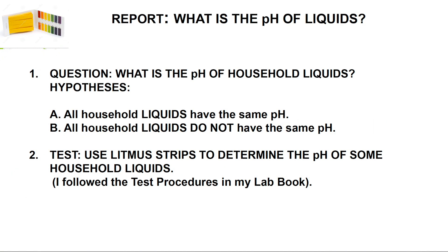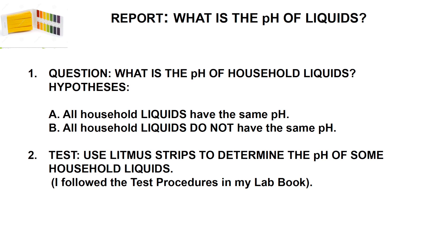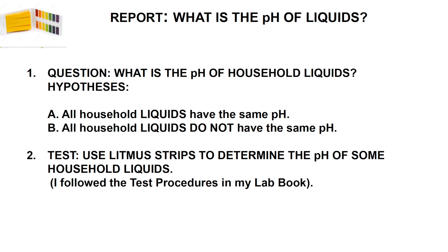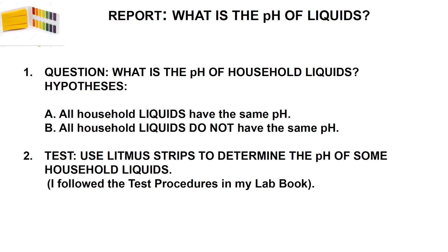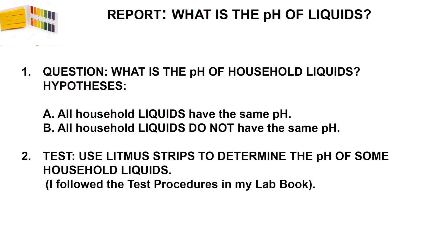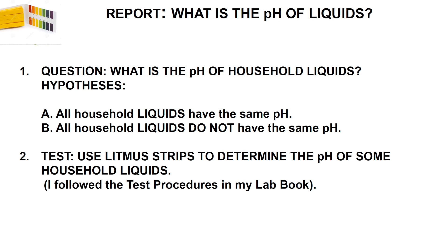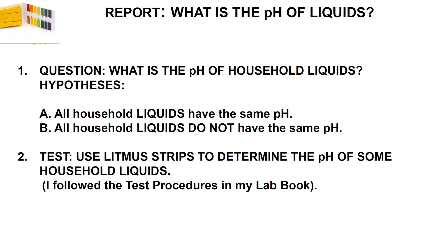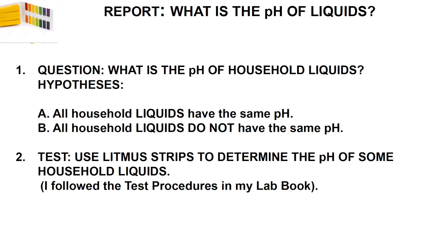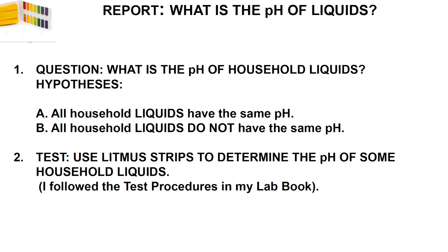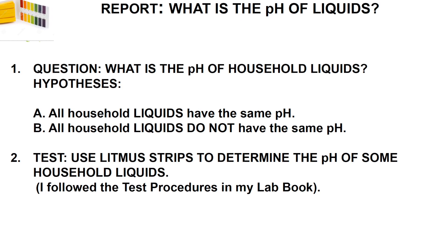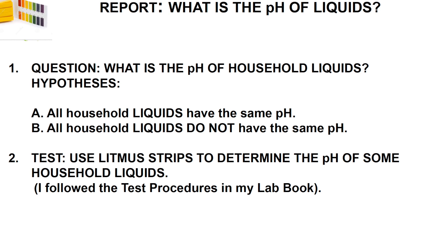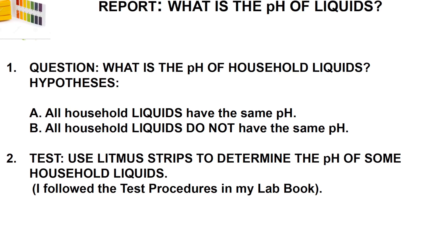The three steps in science are question, test, report. For our question, we need to state our hypotheses. There are two hypotheses we can use for this experiment. The first one, A: all household liquids have the same pH. The second, B: all household liquids do not have the same pH. Think about it and choose your hypothesis.